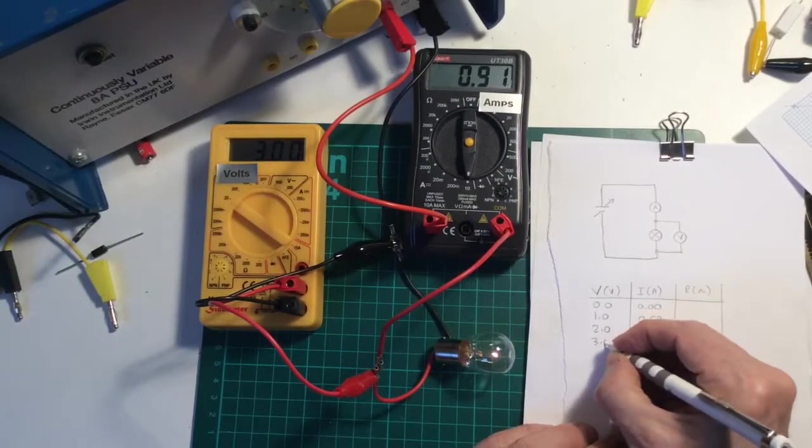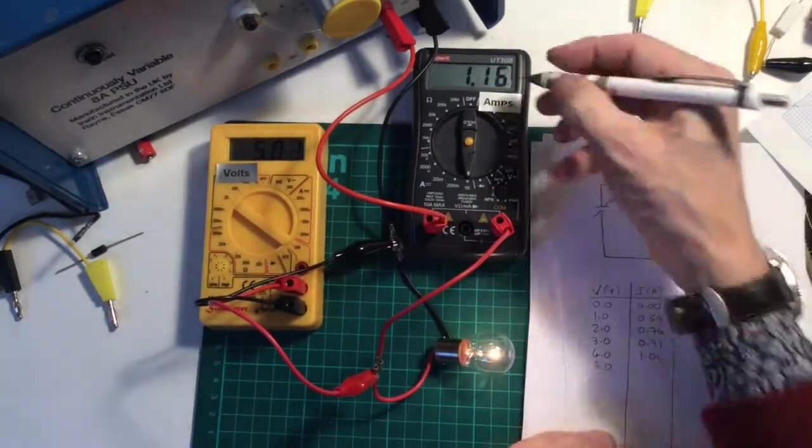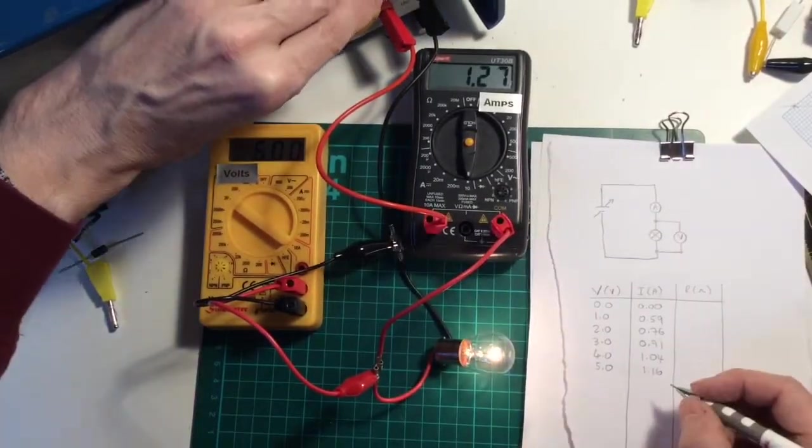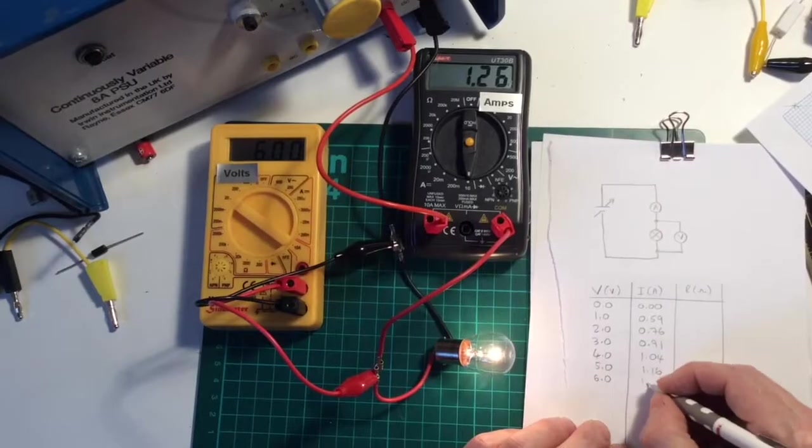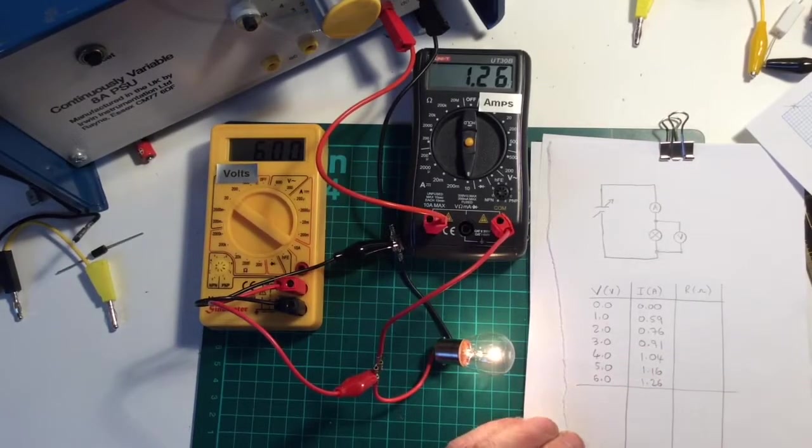Three volts and I've got 0.91 amps, 1.04, 1.16 and six volts, 1.26 amps. Okay, so that's my current when I'm going forwards.